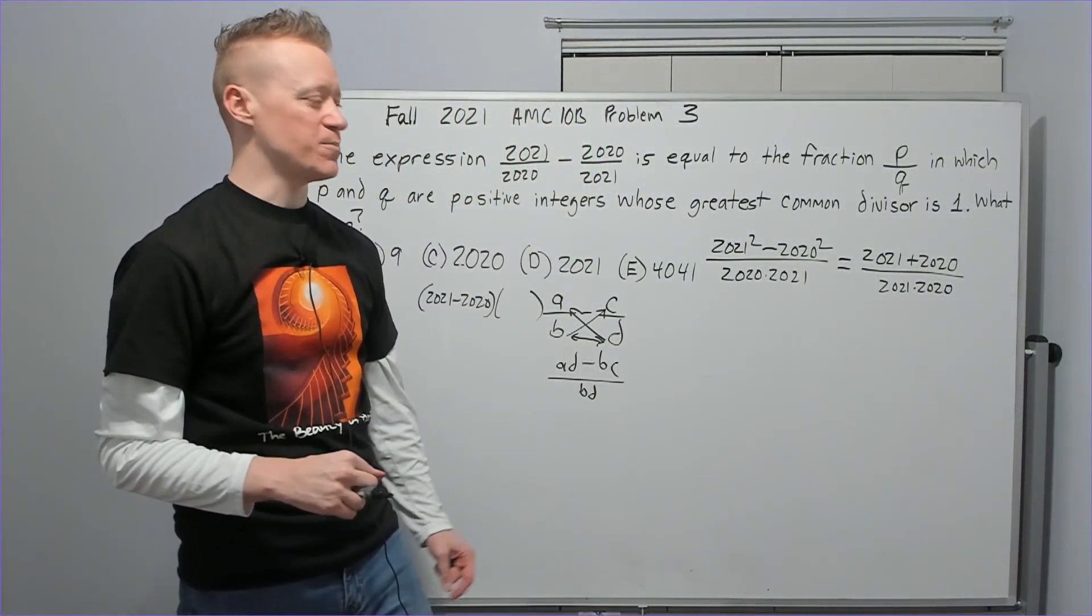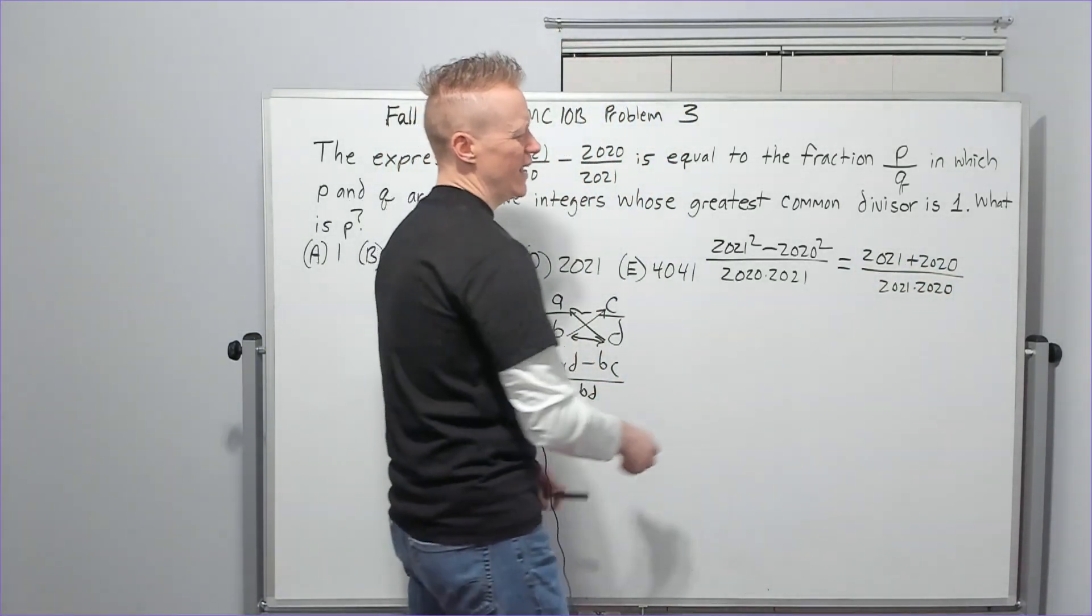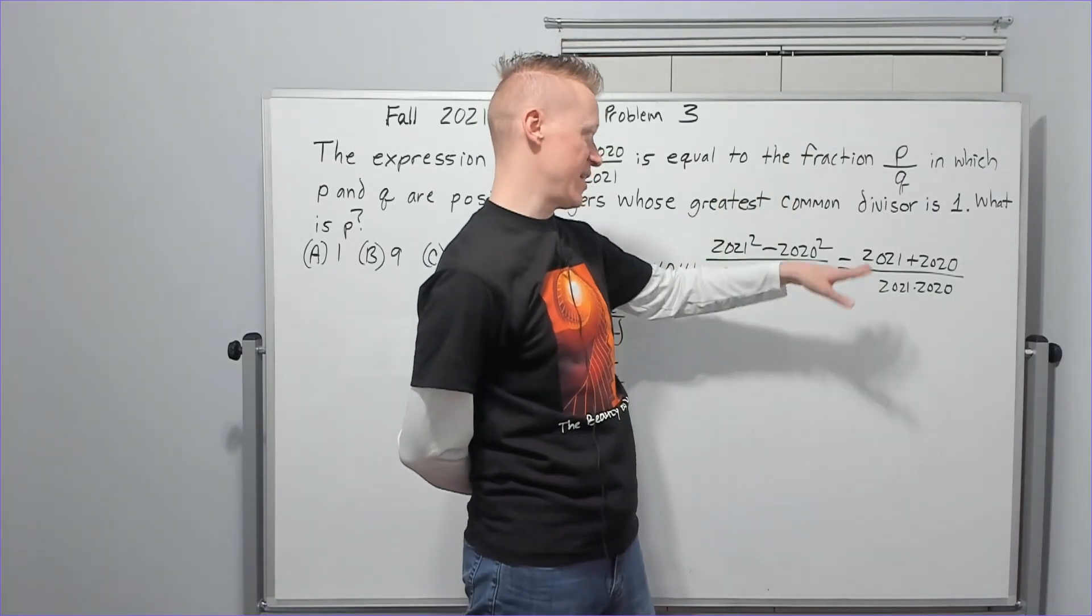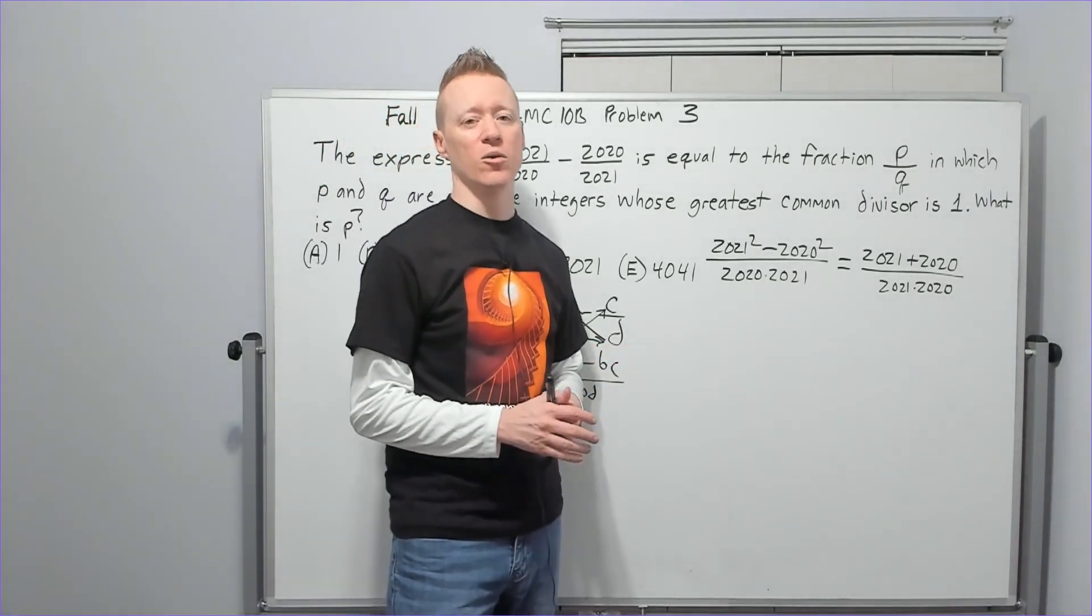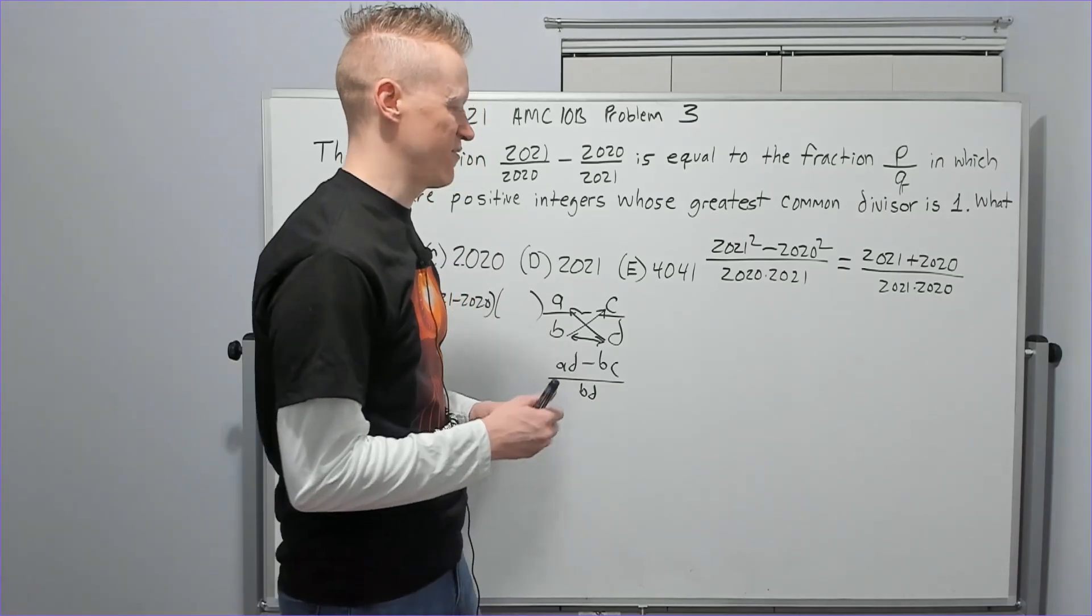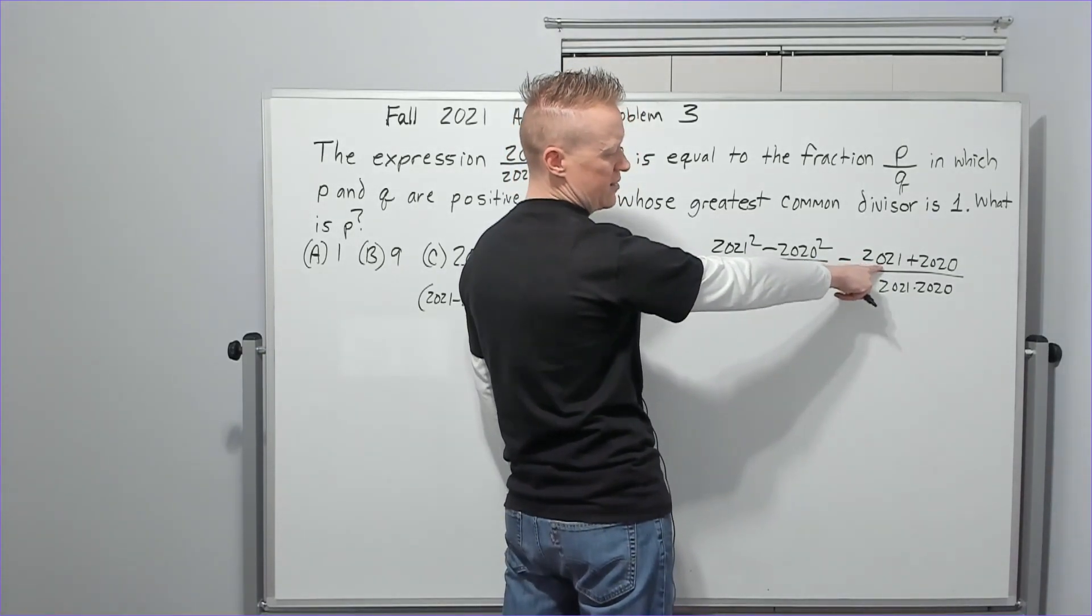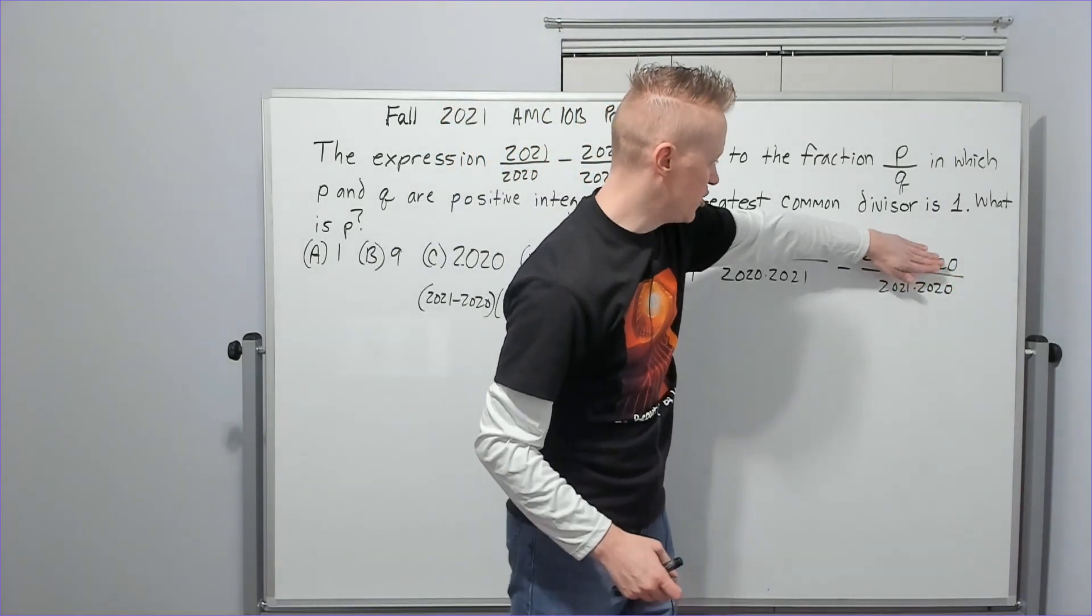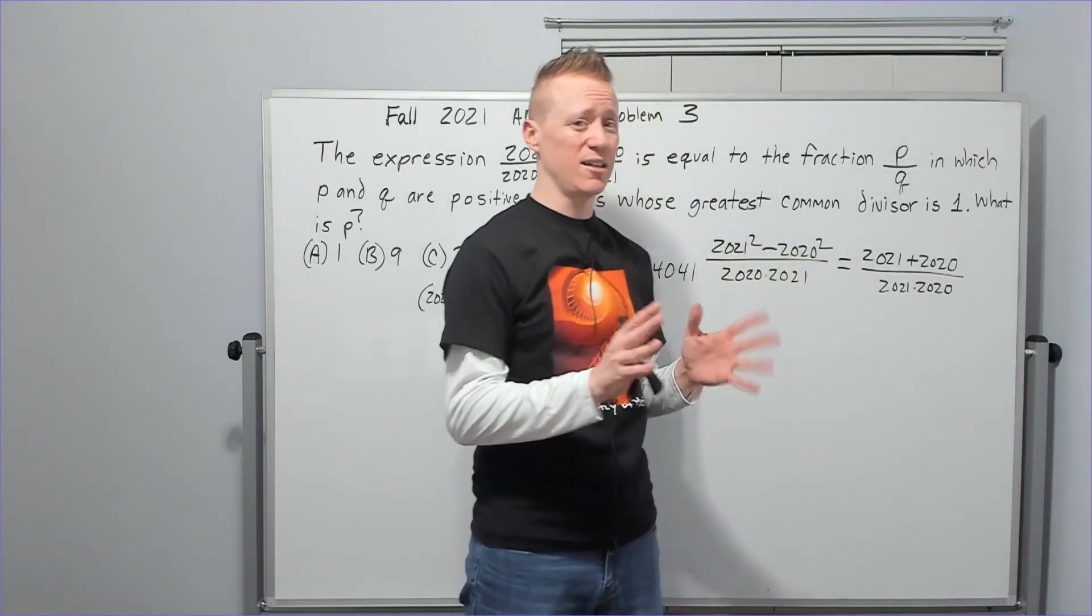I'm going to write this as (2021 + 2020) / (2021 × 2020). Now why don't I just add it? Well, that comes from experience because I can see a potential benefit to leaving it as a sum. Let's say that there is a divisor to 2021, a prime divisor. And actually later in the test you'll probably need to know the prime factorization of the year, which you should always know going into the test.